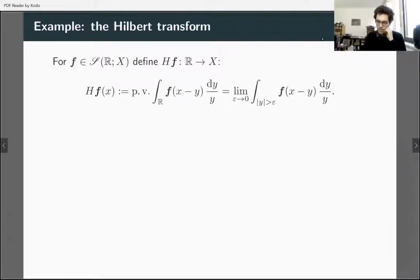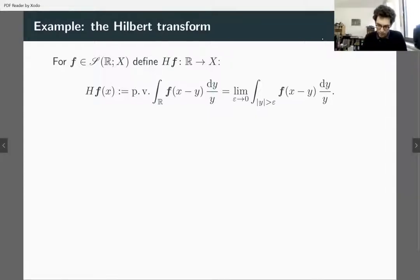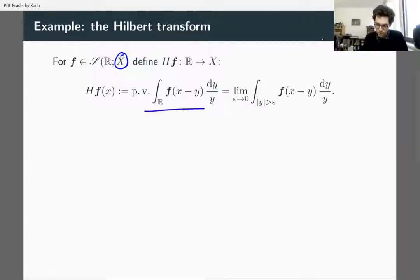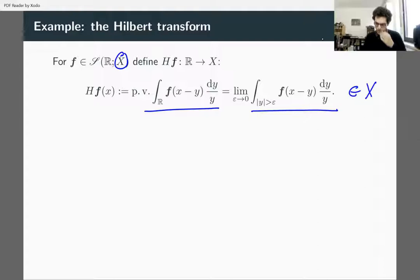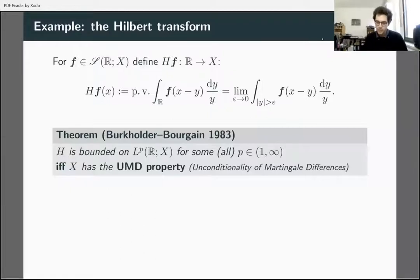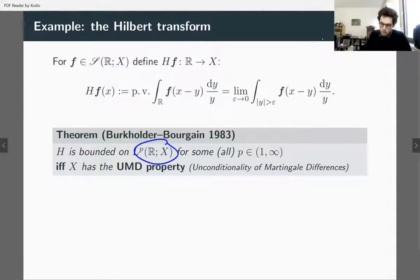An example of Banach-valued harmonic analysis is the Hilbert transform. If you have a Banach-valued Schwartz function, you can define a Hilbert transform of that — it's defined in exactly the same way as the classical scalar-valued Hilbert transform, but now the integral in the principal value is a Bochner integral, so it's valued in X. The question of whether this is bounded on L^p was answered by Burkholder: your Hilbert transform is bounded on L^p valued in X — the Bochner–Lebesgue space — for some (equivalently all) p in the usual range if and only if X has what's called the UMD property.